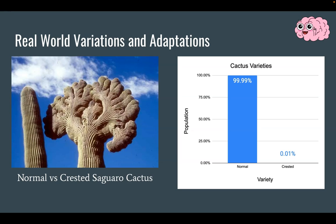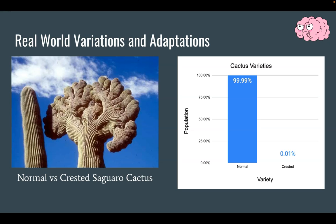Finally, a plant example. On the left is a normal cactus, and on the right is a mutated cactus called a crested cactus. The crested cactus looks cool, but unfortunately it makes the cactus very top-heavy. During a heavy rain, many of these cacti fall over and die. Since that is a disadvantageous trait, you can see in the graph that crested cacti are very unlikely to be found in the population. That trait is disadvantageous, so there will be less of that trait in the population, while the normal cactus is advantageous and its percentage in the population is much higher.